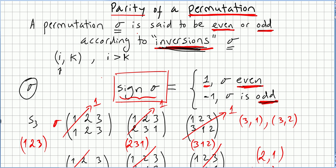A permutation is said to be even or odd according to its inversions. So then we saw the sign of a permutation. Each permutation will have a sign according to the inversions. If the number of inversions is even, the sign of the permutation will be 1. If the number of inversions is odd, thus the permutation will have sign minus 1. We saw some examples here.